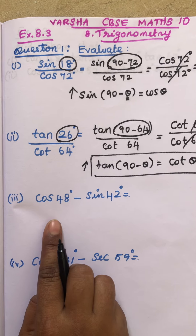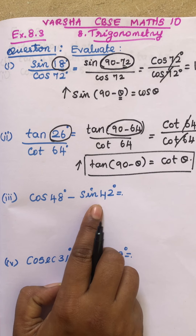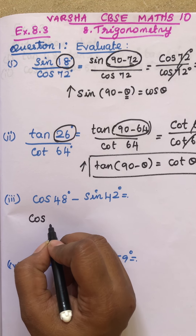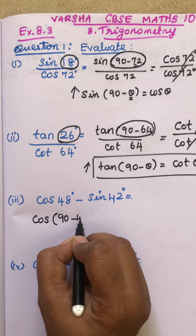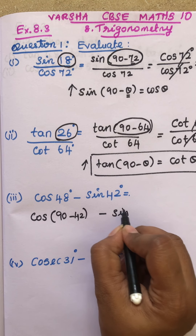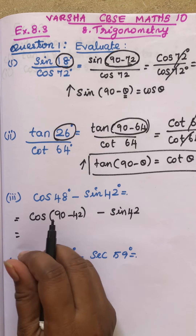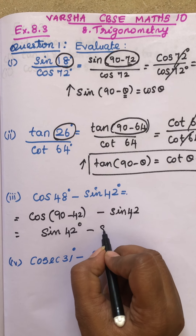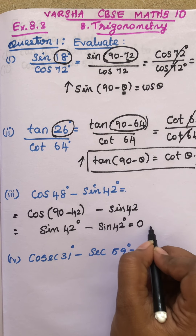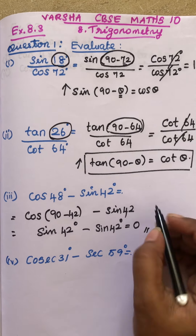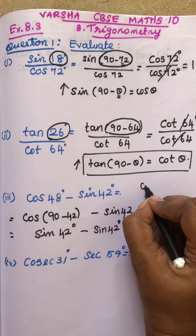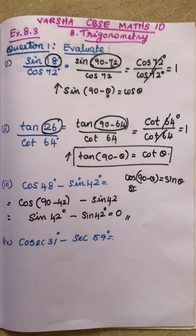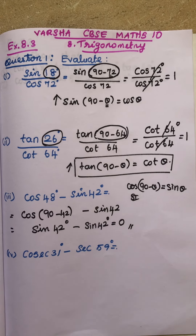Now the third question: cos 48 minus sin 42. You can change any one of them. I take cos 48. Write cos, and for 48 write 90 minus 42, while sin 42 remains unchanged. Using the formula cos(90 minus θ) equals sin θ, cos(90 minus 42) becomes sin 42. So sin 42 minus sin 42 equals 0. That is your answer.